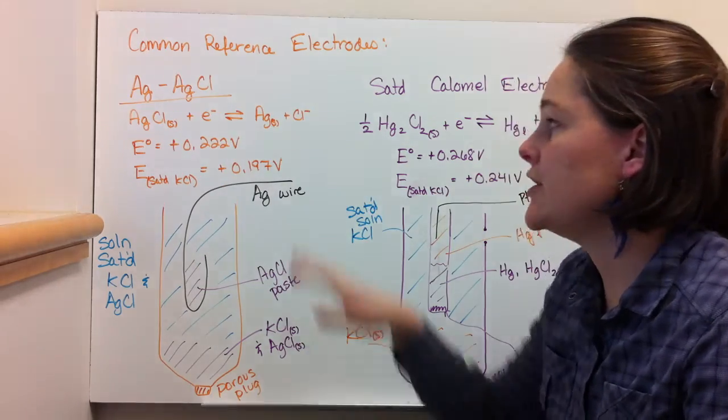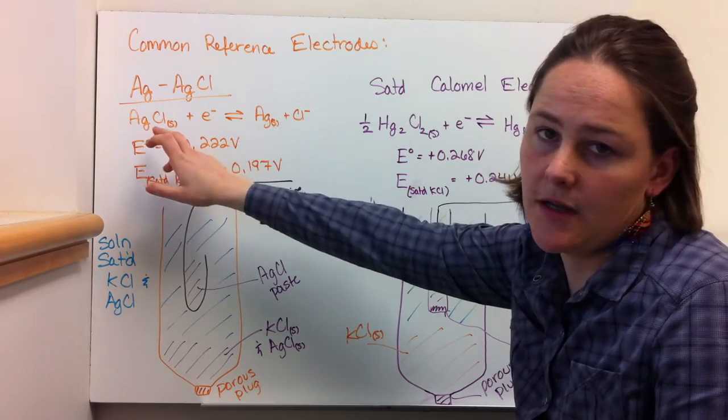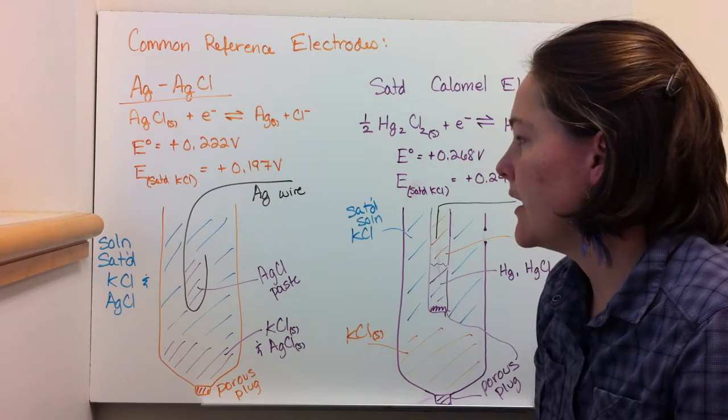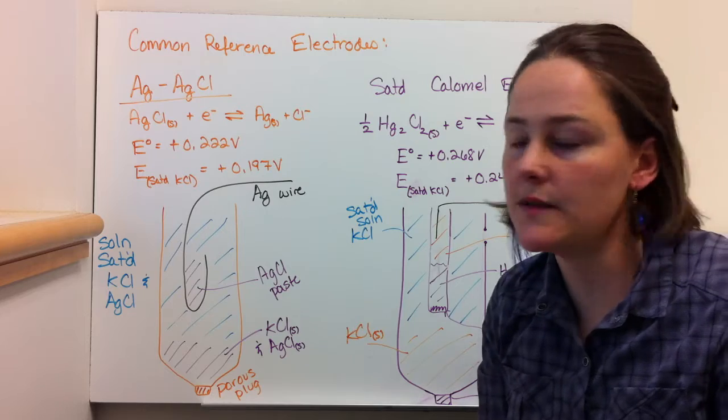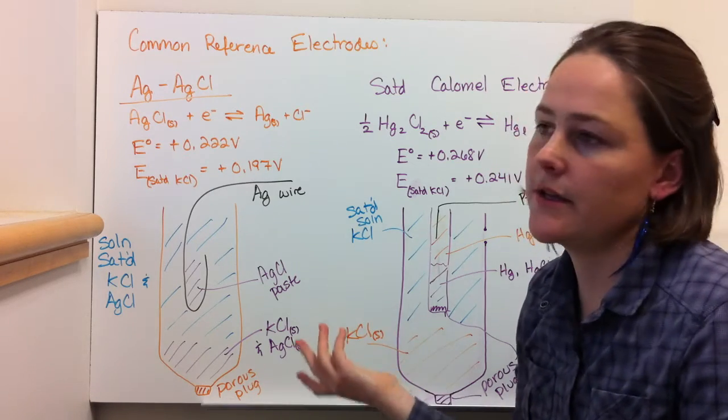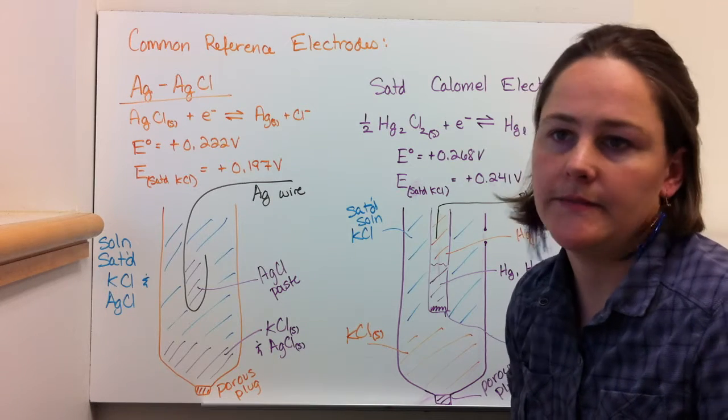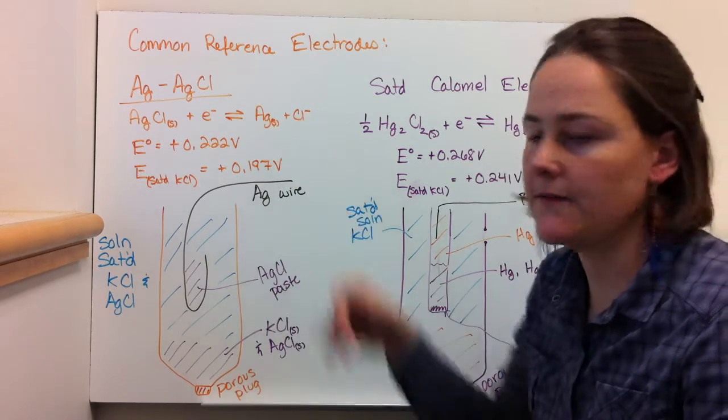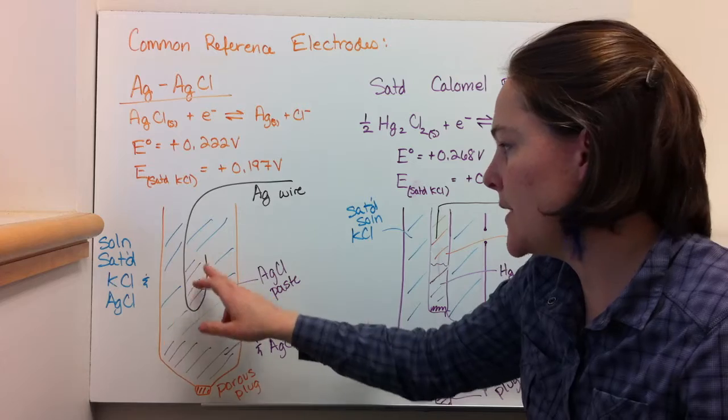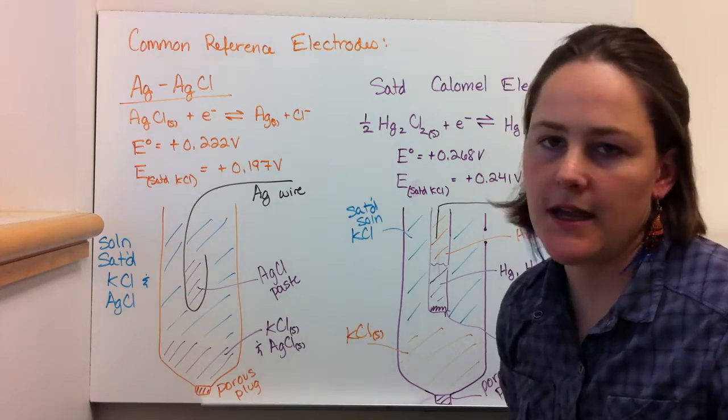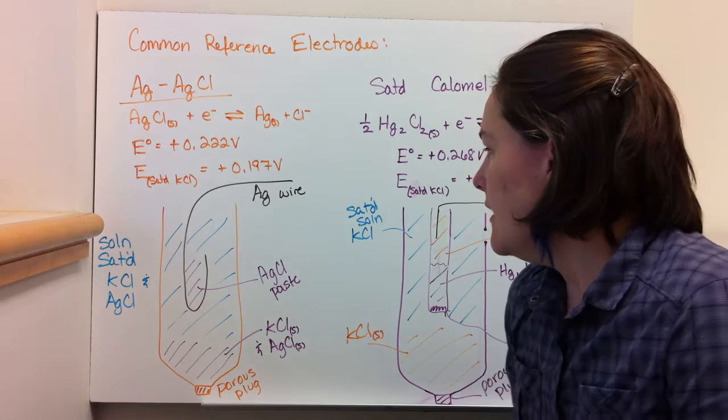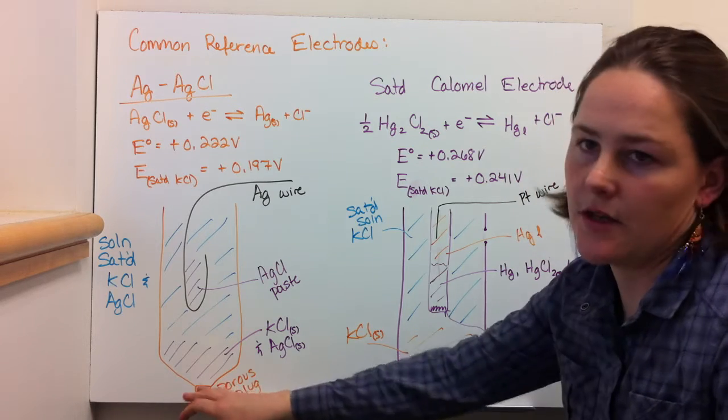Here is an AgAgCl electrode where you have AgCl solid giving an electron out to form silver metal plus chloride. The E0 is 0.222 volts. But if you calculate it for a saturated KCl solution, which is the conditions that you're most likely to have inside of a reference electrode, then you actually have a different potential. Basically how it works is you have a silver wire coming in with some AgCl paste hanging out in a loop, in the loop of the silver wire. And that's in contact with the solution that's saturated with KCl and AgCl. And then you have a porous plug going to your solution, like a salt bridge.